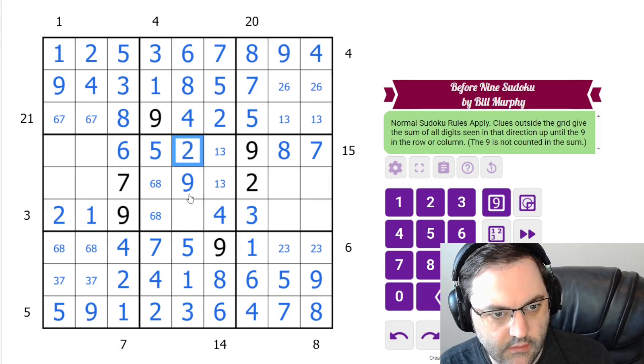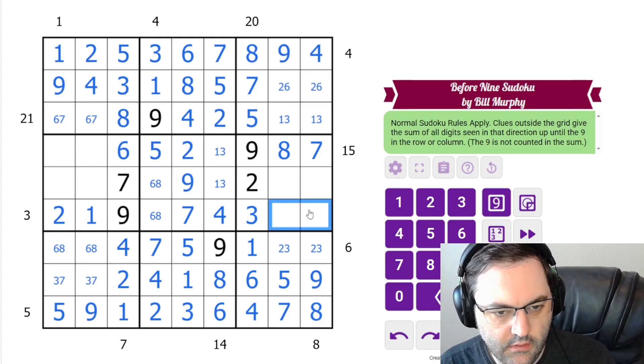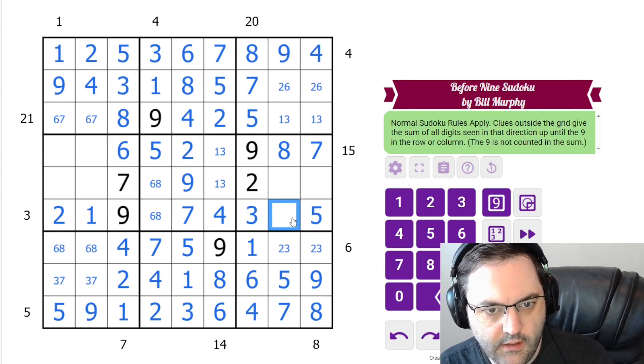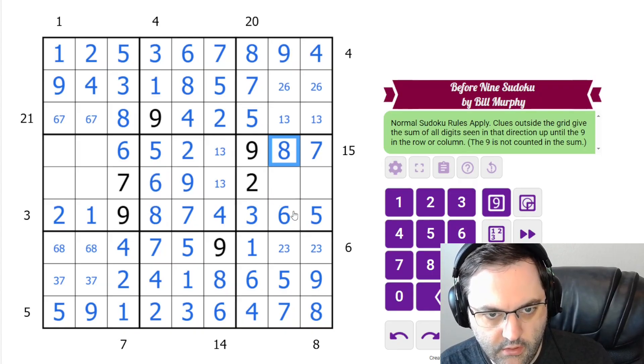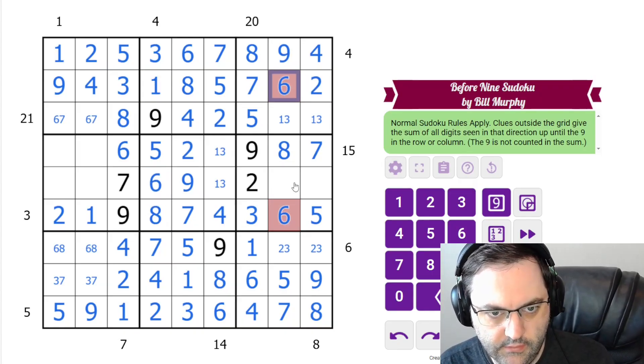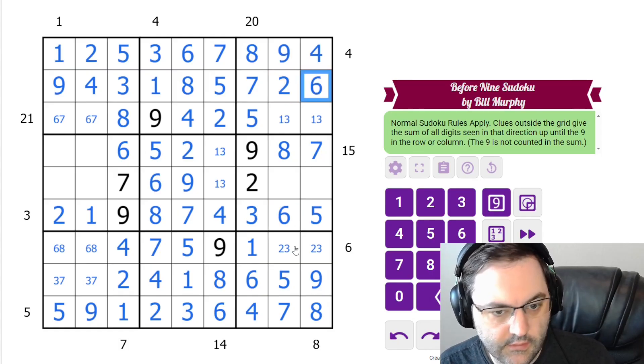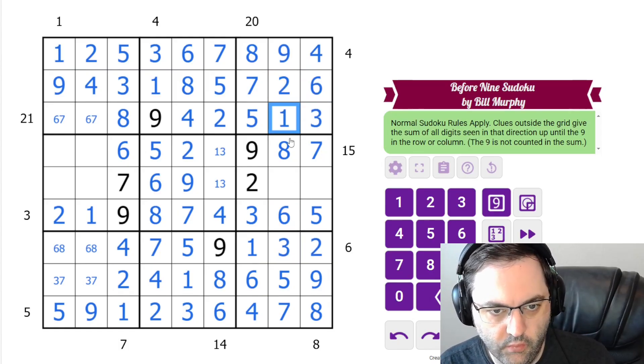These are now 2, 7. Across here, we still need a 5. We still need a 6 and 8. Gotta go in that order. And that 6 resolves 2, 6. 2, 6. 2, 3, 3, 1.